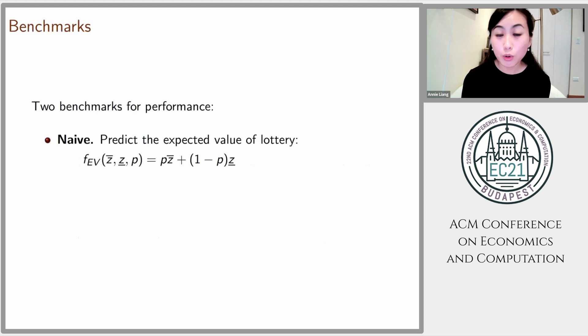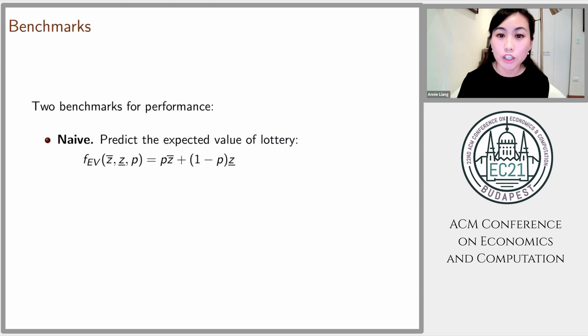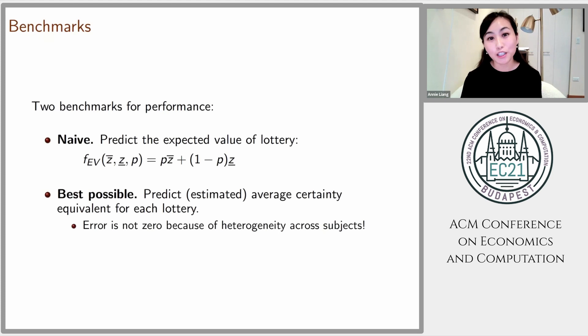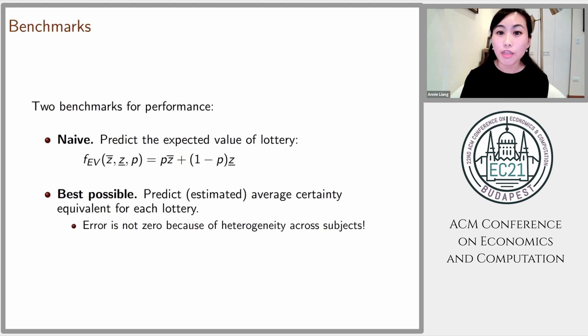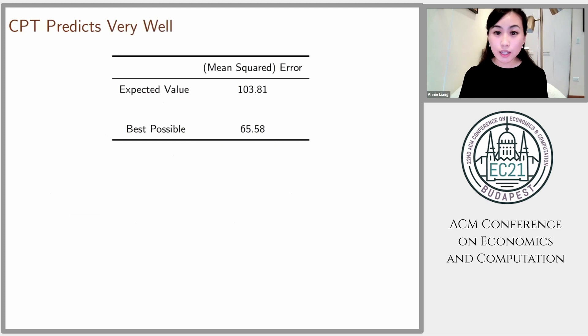Here we look at mean squared error, and to understand the number we get, we assess it relative to two benchmarks. One baseline is to simply predict the expected value of the lottery, which corresponds to a degenerate case of CPT. At the other end, we actually know what the best possible error is in this problem. Because there are only 25 lotteries and many reports per lottery, we can estimate the average certainty equivalent lottery by lottery — that's going to be the best possible prediction, though it won't give an error of zero due to heterogeneity across subjects.